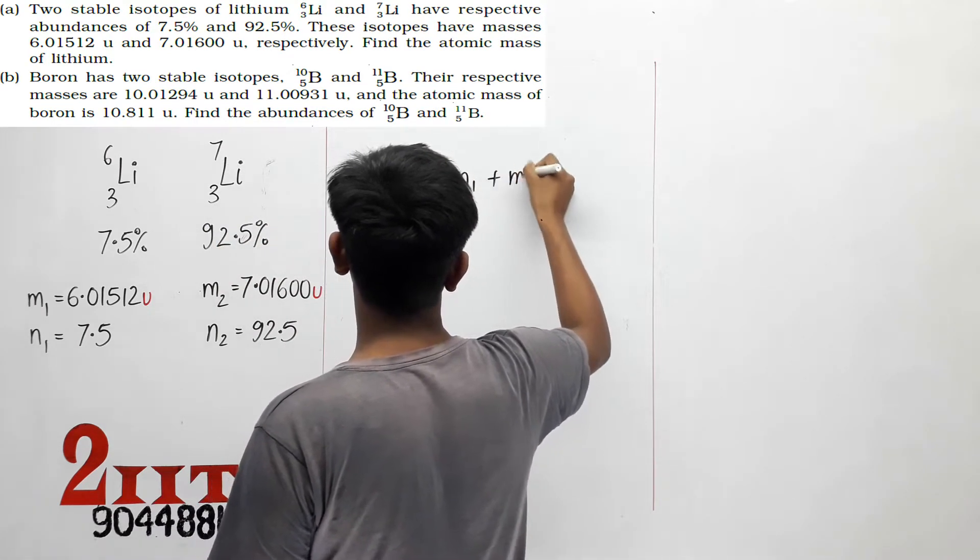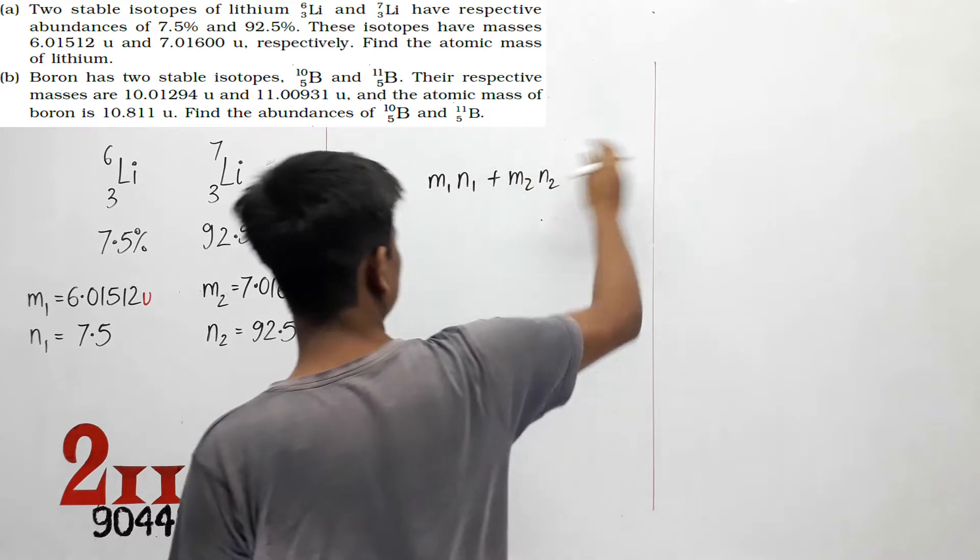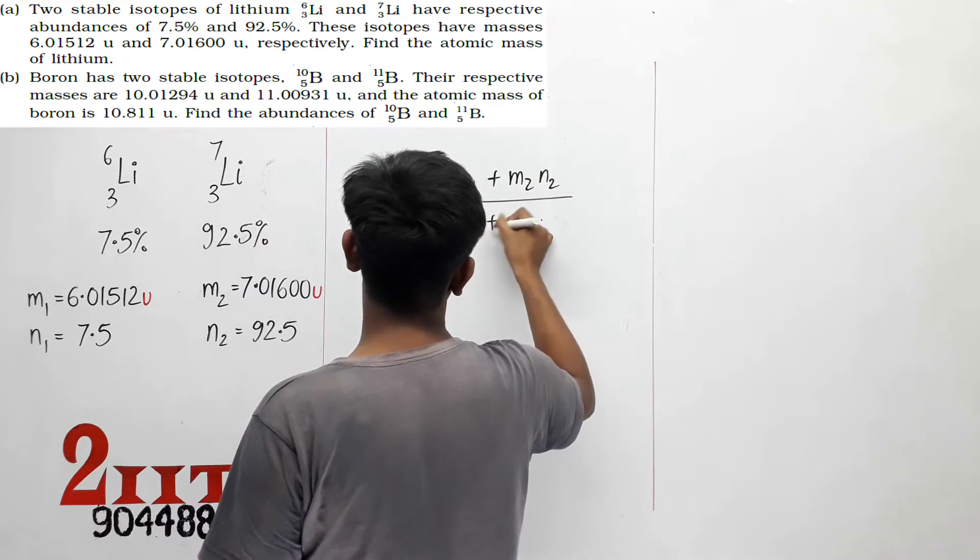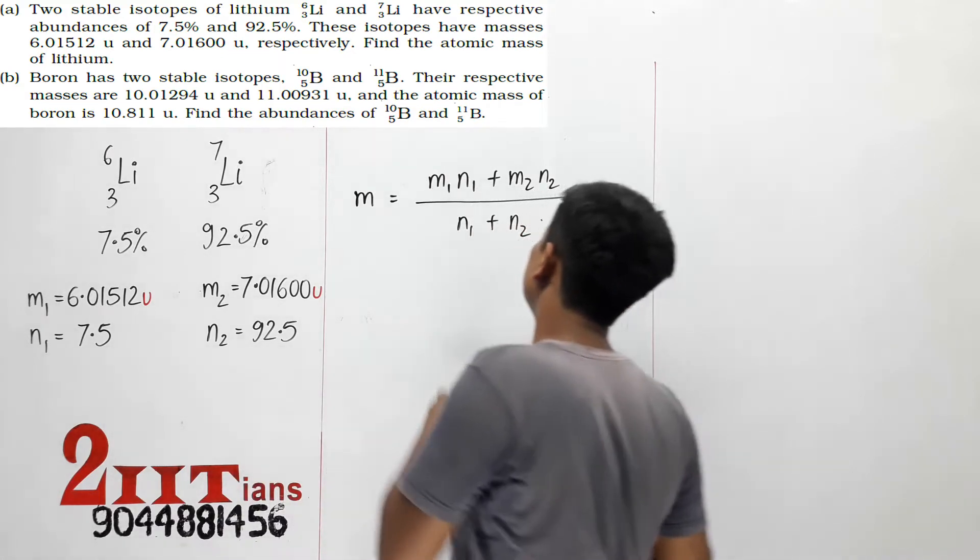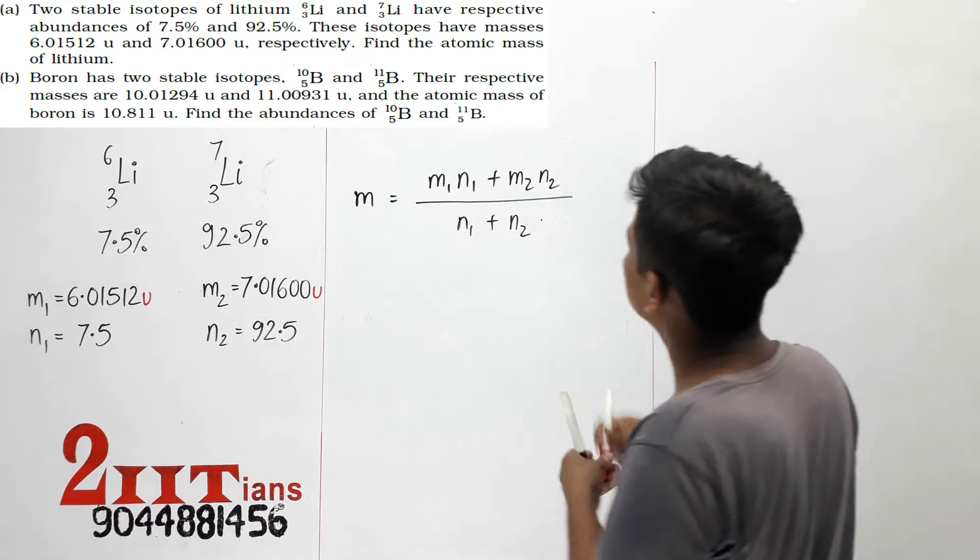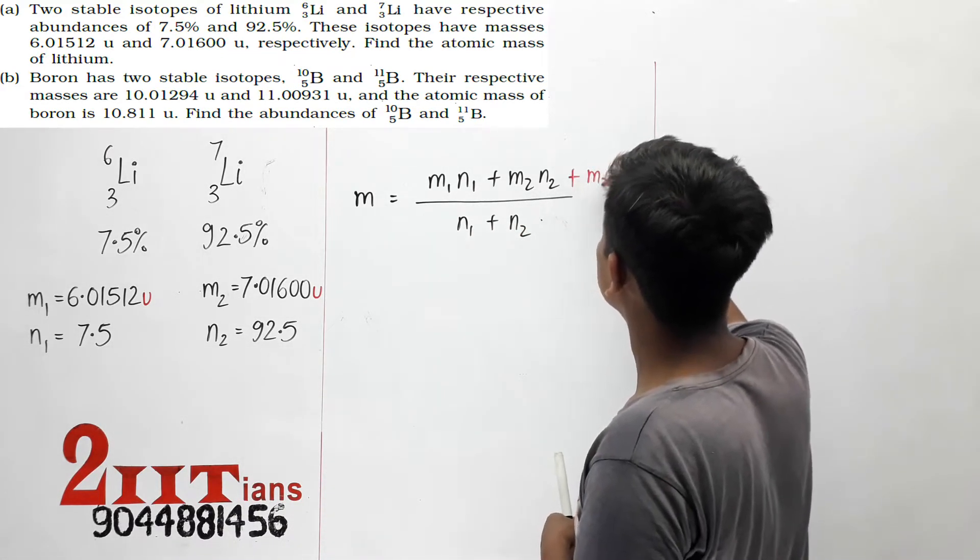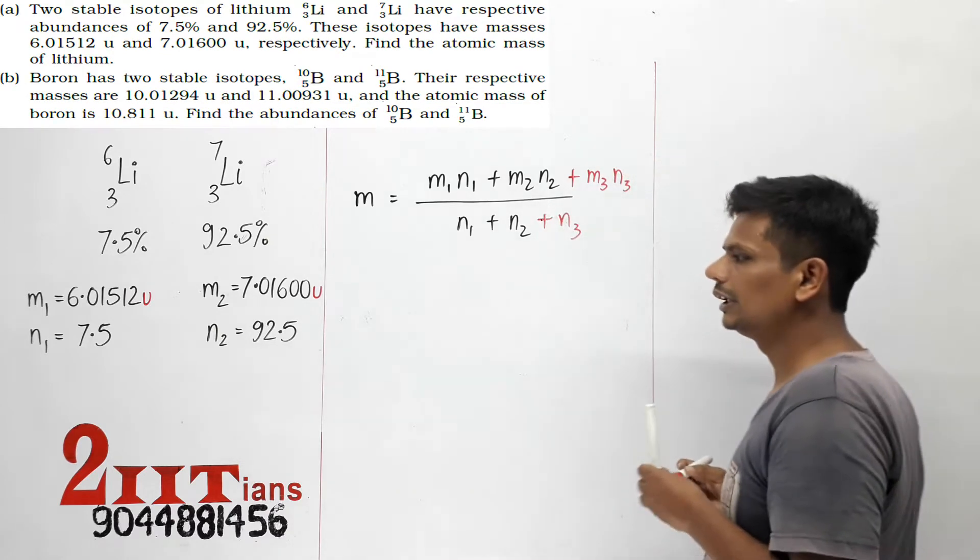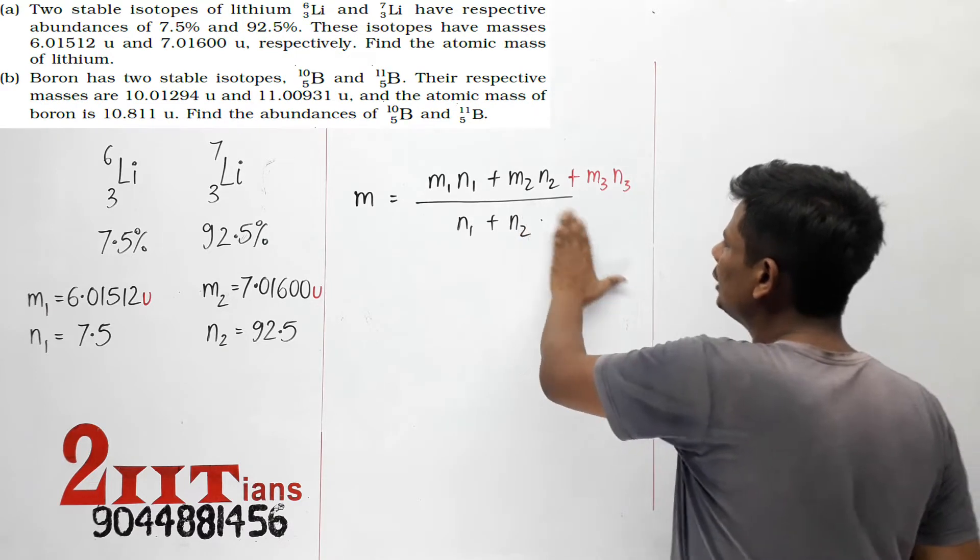If there are more than two isotopes, the atomic mass formula is: M = (M₁N₁ + M₂N₂)/(N₁ + N₂). If there are more isotopes, we continue adding M₃N₃ and so on, divided by N₁ + N₂ + N₃.